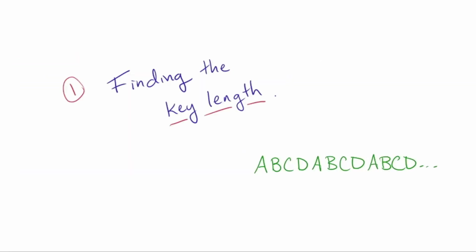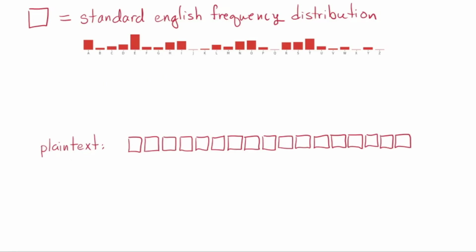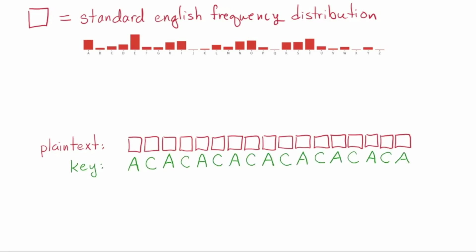Let's begin with finding the key length — this is the most interesting step. Let's think of our plain text not as a specific example, but as consisting of a bunch of positions where English letters can go with a certain probability. I'll draw these as red boxes. The red box denotes that the letter there should most likely be an E, but also very likely an A, etc. It follows the English frequency distribution shown here in red. Now suppose my key is just two letters long: AC. Let's consider the first position — A means zero, so it's not a shift at all. So the cipher text's probability distribution is the same as the plain text here — it's most likely an E, pretty likely an A, and so on. So I'll draw a red box there.